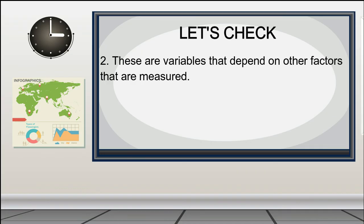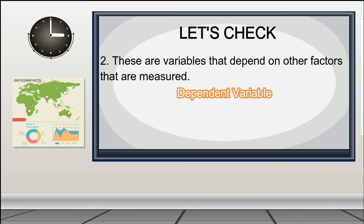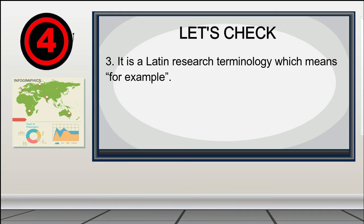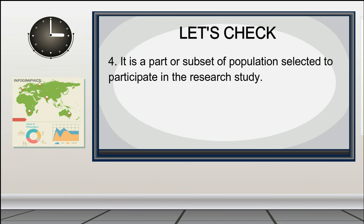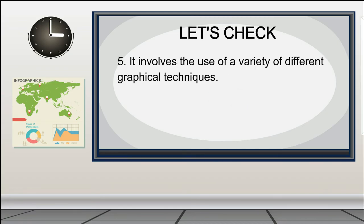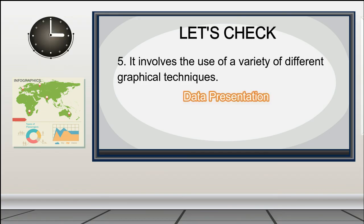2. These are variables that depend on the factors that are measured. The answer is: Dependent variable. 3. It is a Latin research terminology which means 'for example.' The answer is: E.g. 4. It is a part or subset of populations selected to participate in a research study. The answer is: Sample. 5. It involves the use of a variety of different graphical techniques. The answer is: Data presentation.